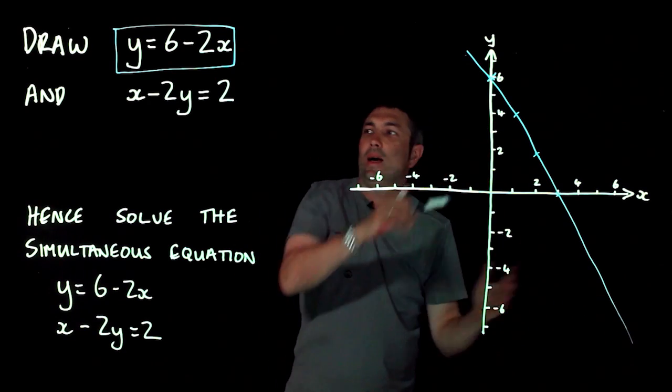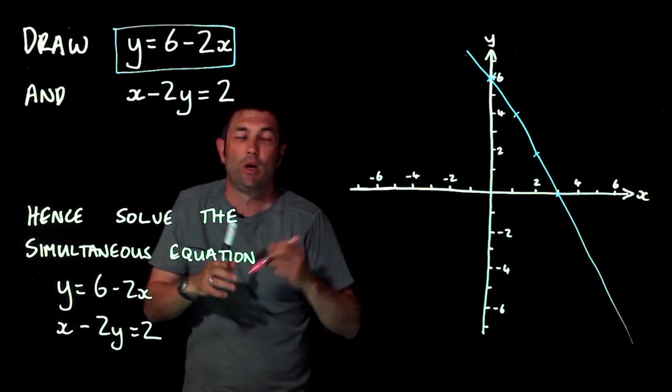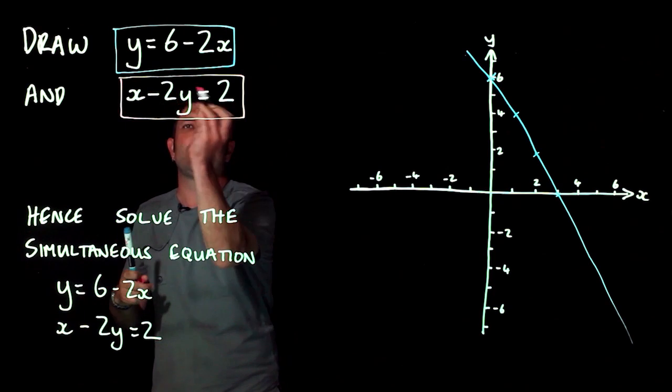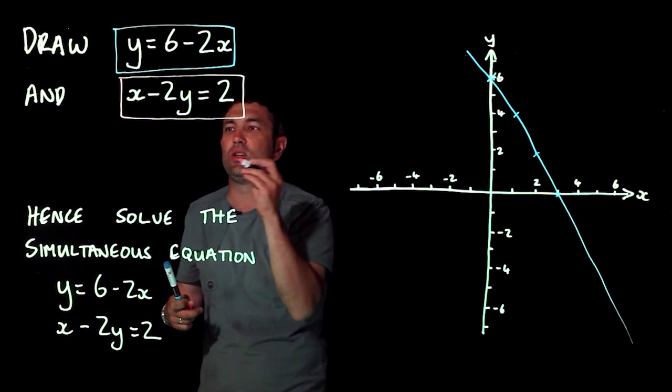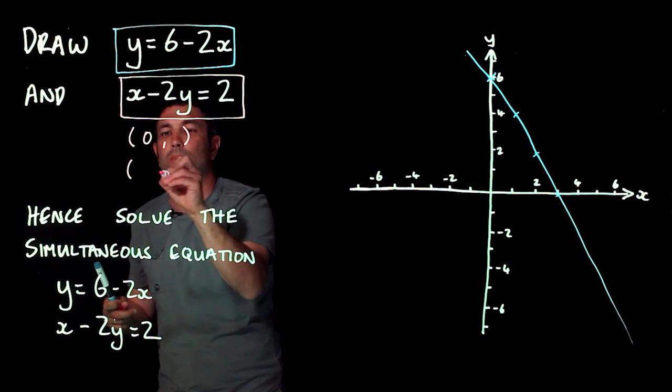Now we don't know anything more about what we've got to do with it, so we're just going to leave that how it is. Now on the same set of axes, and you'll be given the axes in the exam, I'm going to draw this. When the x's and y's are on the same side, what we tend to do is we find two points: naught something and something naught.